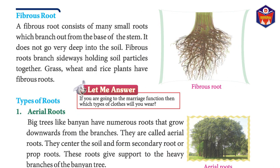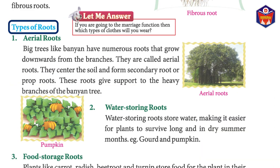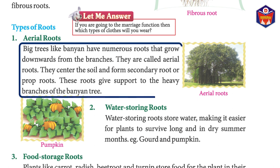A fibrous root consists of many small roots which branch out from the base of the stem. It does not go very deep into the soil. Fibrous roots branch sideways, holding soil particles together. Grass, wheat, and rice plants have fibrous roots.